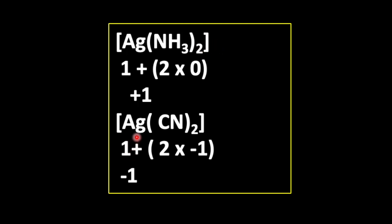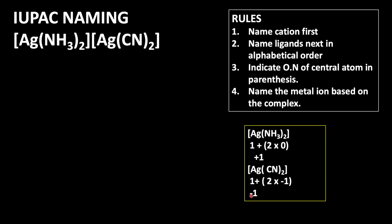For [Ag(CN)2], again Ag is in plus 1 oxidation state. 2 times minus 1 because cyanide carries minus 1 charge equals minus 1. It means it is an anionic complex. We got which one is anion and which one is cationic complex.